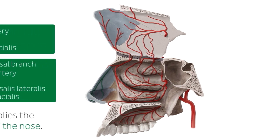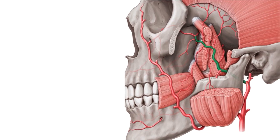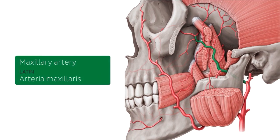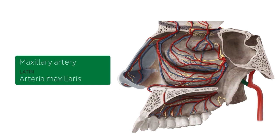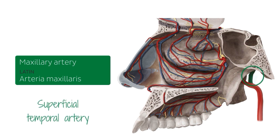Now let's look at the other branch of the external carotid artery that supplies the nasal cavity, which is the maxillary artery. The maxillary artery is one of the two terminal branches of the external carotid artery. It passes underneath the mandible before it courses up the face, giving off many branches. We can also see another view of the maxillary artery, as well as the other terminal branch, the superficial temporal artery.